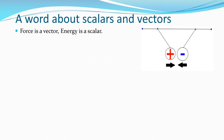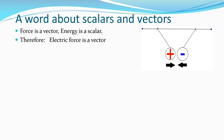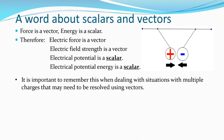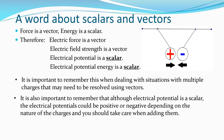A quick word about scalars and vectors. Force is a vector and energy is a scalar. Electric force is a vector — it has both a magnitude and a direction. Electric field strength is also a vector. But electrical potential, because it is simply a matter of energy, is a scalar. Electrical potential energy is also a scalar. It is important to remember this when dealing with situations with multiple charges that may need to be resolved using vectors. Also, although electrical potential is a scalar, the electrical potentials could be positive or negative depending on the nature of the charges, so they could be in opposition to each other — you should take care when adding them together.